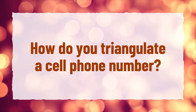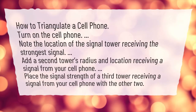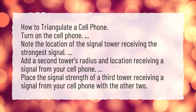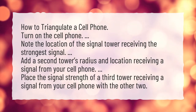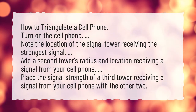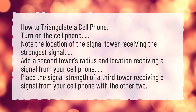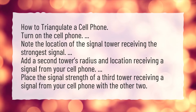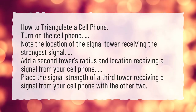How do you triangulate a cell phone number? How to triangulate a cell phone: Turn on the cell phone. Note the location of the signal tower receiving the strongest signal. Add a second tower's radius and location receiving a signal from your cell phone. Place the signal strength of a third tower receiving a signal from your cell phone with the other two.